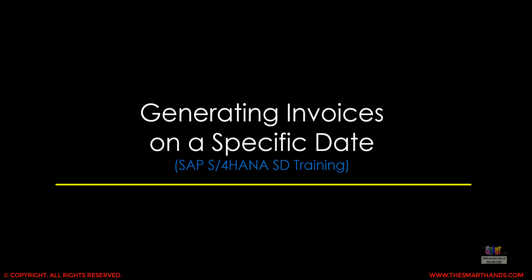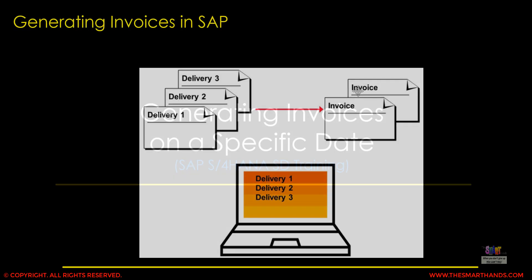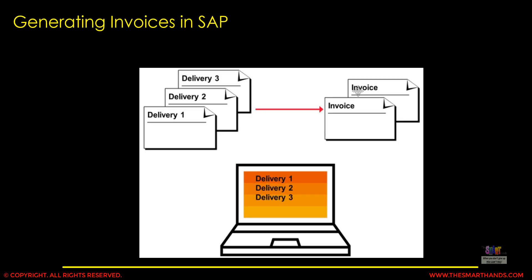Now we're going to learn how we can auto-generate invoices on a specific date. In the previous videos we've seen that the system finds all delivery documents where post goods issue is completed and they are ready for invoicing. Using the Fiori application or the VF04 transaction, you can see what outbound deliveries are waiting to be billed, and the system will generate the invoices.